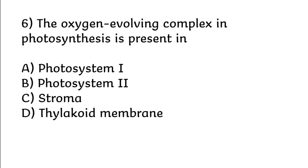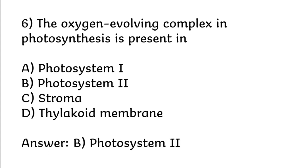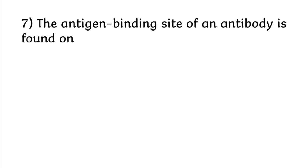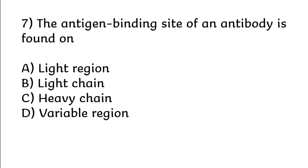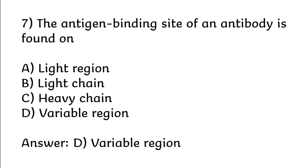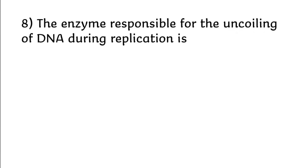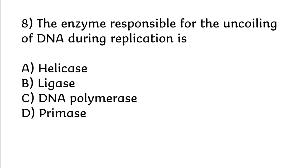Correct answer is option B: photosystem two. The antigen binding site of an antibody is found on: light region, light chain, heavy chain, variable region. Correct answer is option D: variable region. The enzyme responsible for the uncoiling of DNA during replication is: helicase, ligase, DNA polymerase, primase.